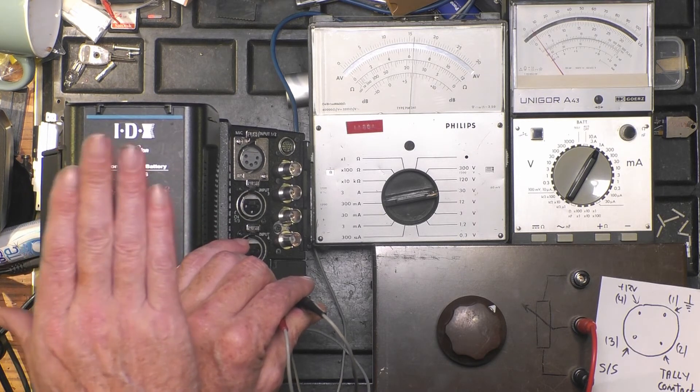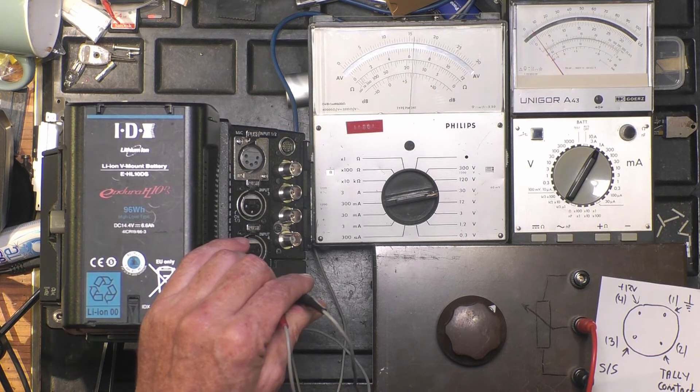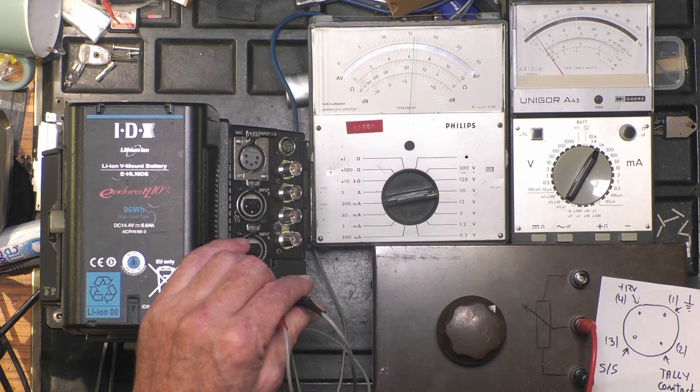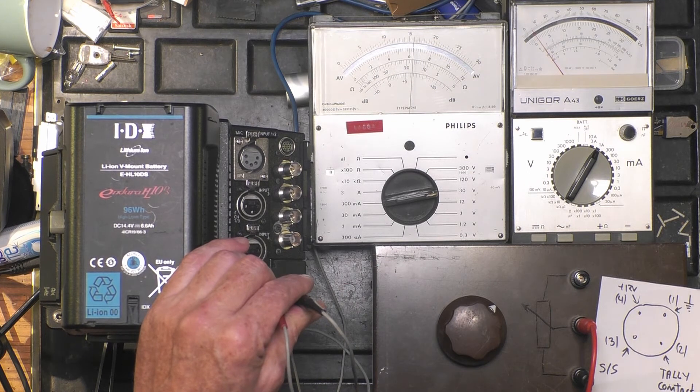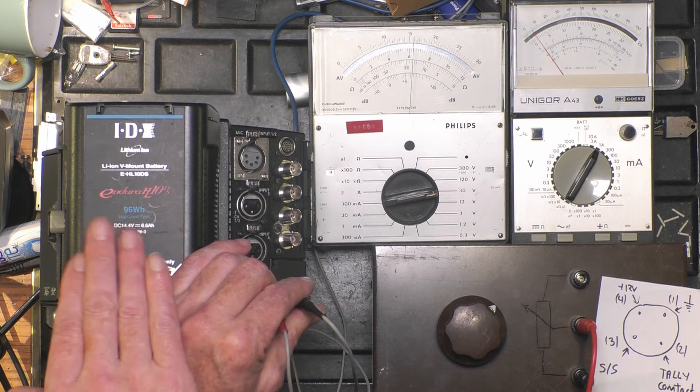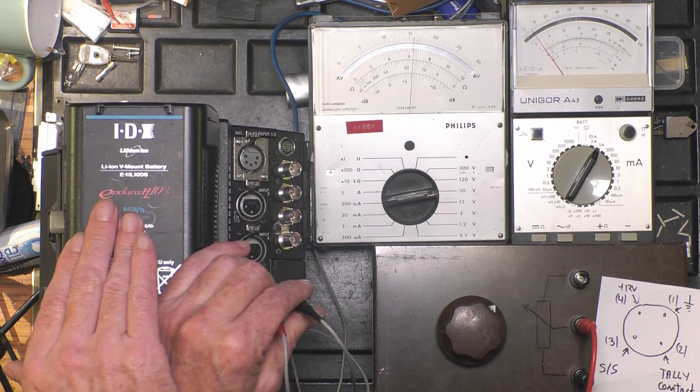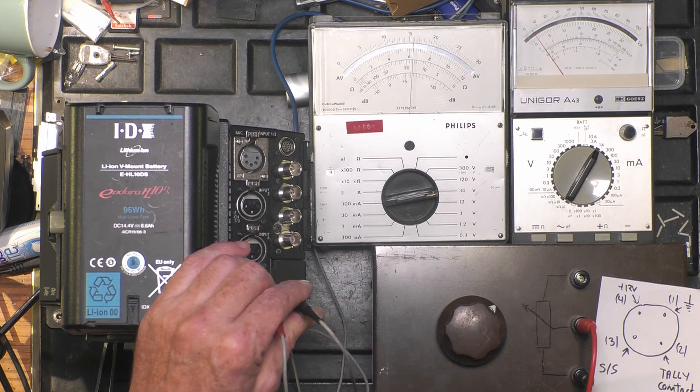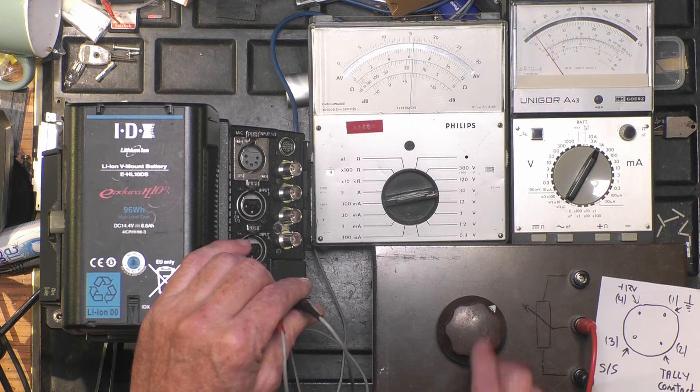No, because it's an unregulated 12 volt output. It means it follows the input. So as this battery is at about 16 volt, the 12 volt output will also be at about 16 volt. So during the discharging of the battery, the voltage of the battery will go down.